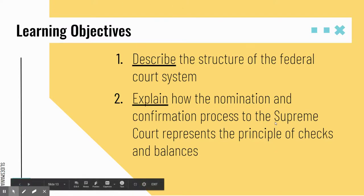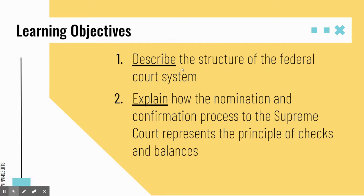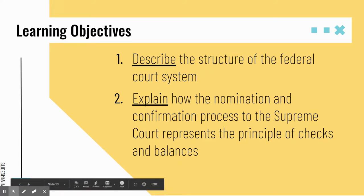Your goals for today were to describe the structure of the federal court system and explain how the nomination and confirmation process to the Supreme Court represents the principle of checks and balances. Go back, fill in anything if you need to, and answer the questions. Let me know if you have any questions in class. See ya!